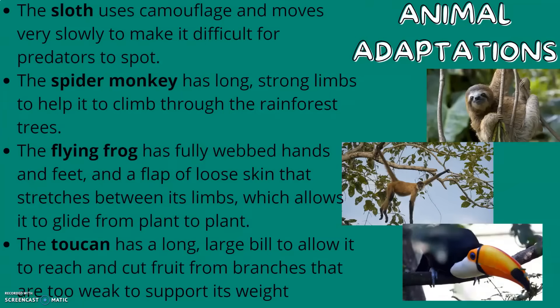Animal adaptations: the sloth uses camouflage and moves very slowly to make it difficult for predators to spot. The spider monkey has long strong limbs to help it climb through the rainforest trees. The flying frog has fully webbed hands and feet and a flap of loose skin that stretches between its limbs, which allows it to glide from plant to plant. The toucan has a long large bill to allow it to reach and cut fruit from branches that are too weak to support its weight.